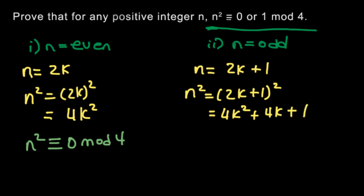So we use the same method as the first case here. And we see that 4k squared is divisible by 4, 4k is divisible by 4, and 1 isn't. So we have a remainder of 1 when we divide this whole thing by 4. Hence, we can write this as n squared is congruent to, when n is odd, 1 mod 4.